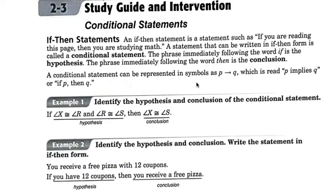A conditional statement can be represented with symbols as P and an arrow Q, which is read P implies Q. I don't use that, actually. I always just use if-P, then-Q.